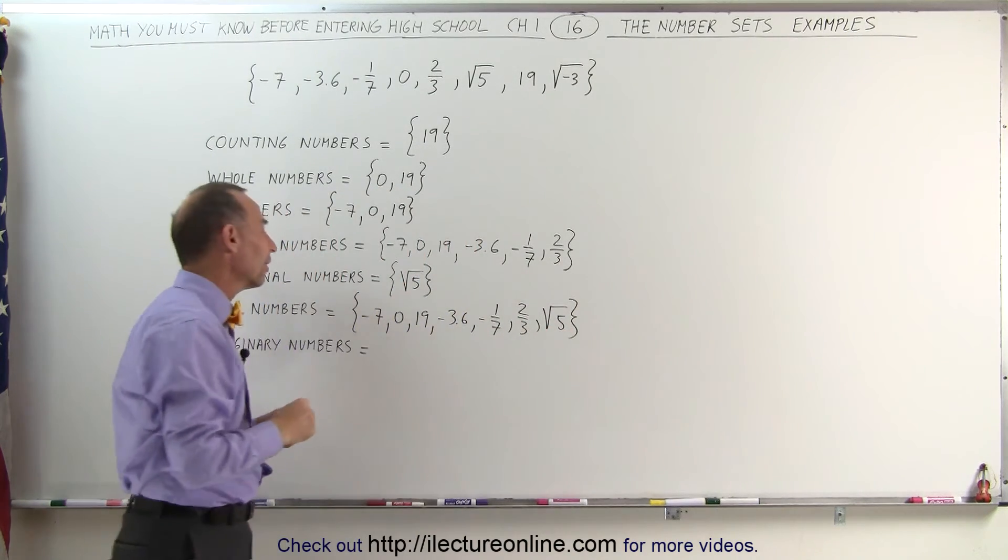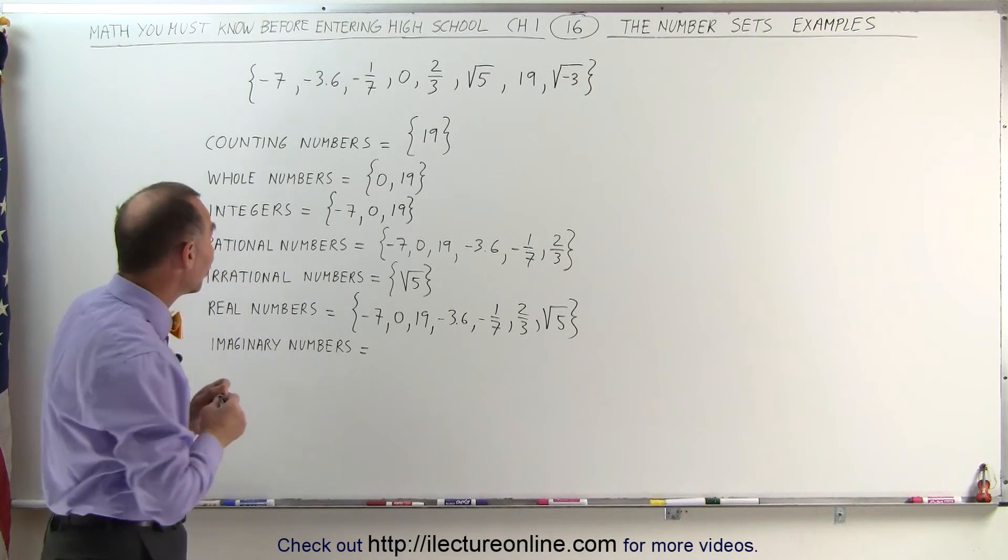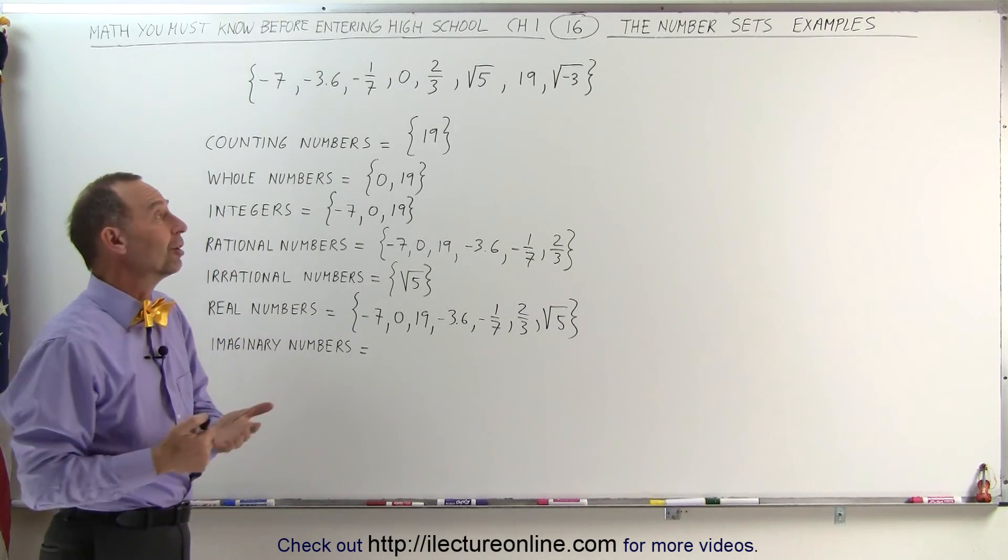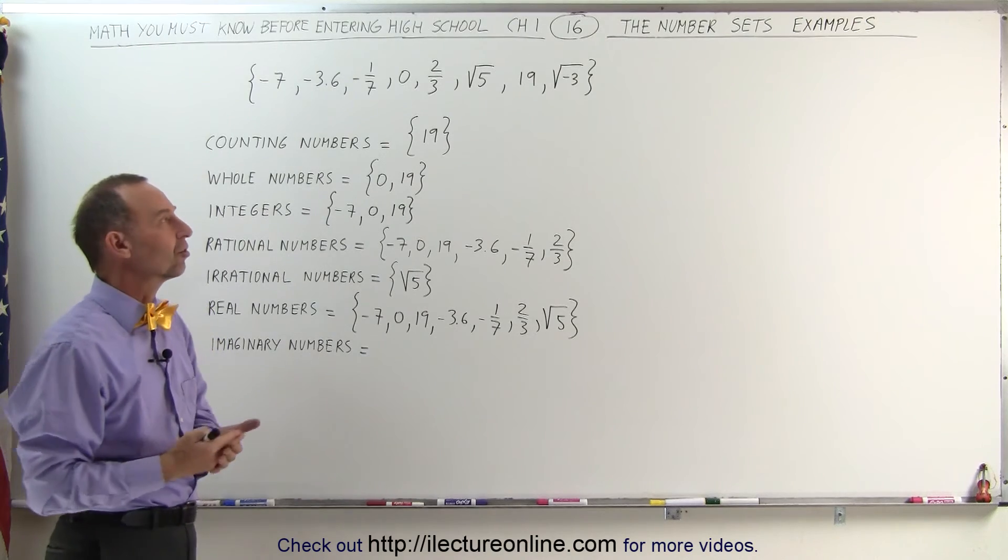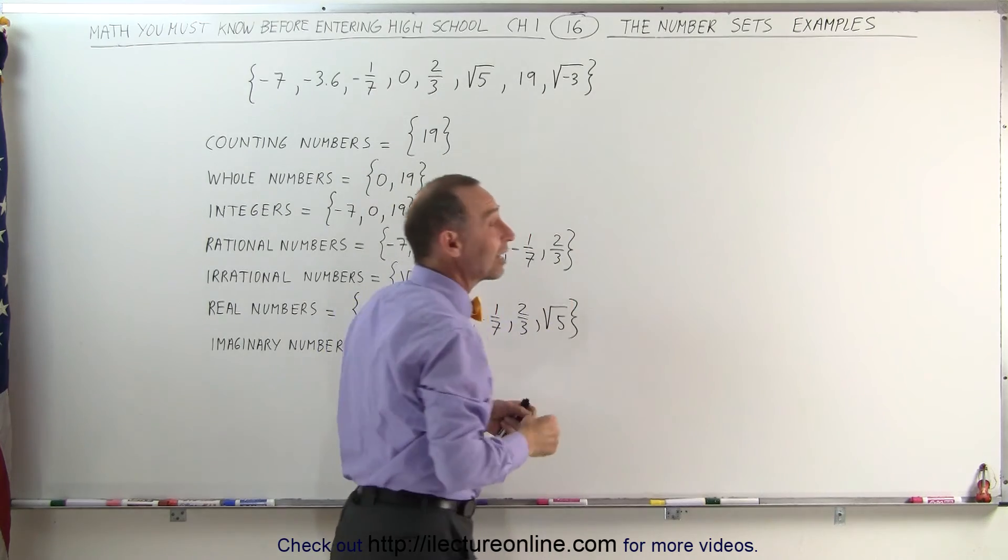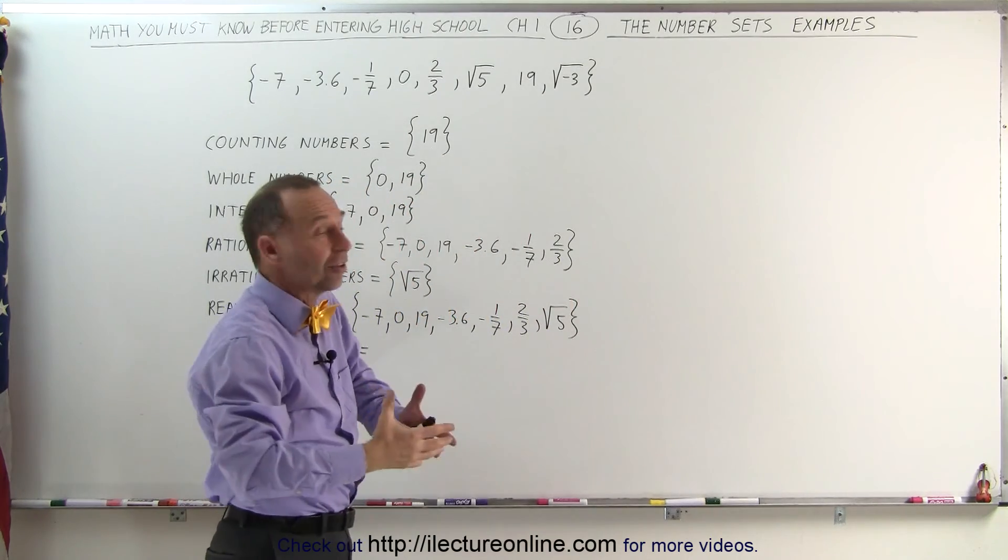That leaves us with one number there that we did not include with the real numbers. Therefore, it's not real. It's called an imaginary number because it doesn't really exist. We cannot find the square root of negative 3. If you try to put that in your calculator, you'll get an error. It doesn't exist.